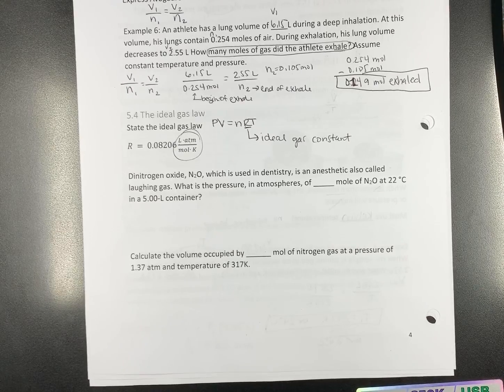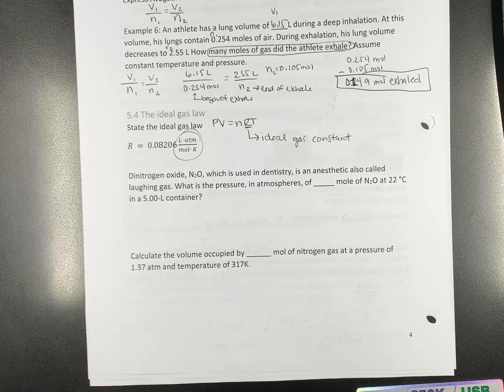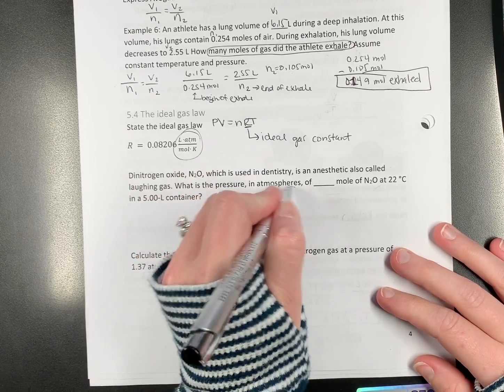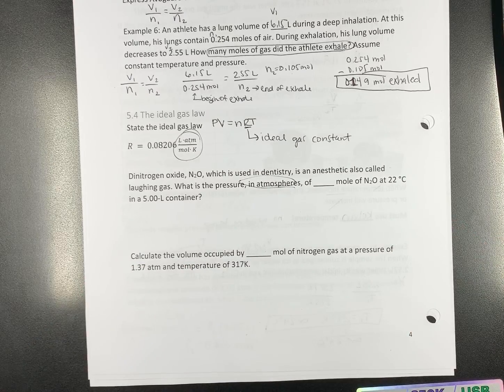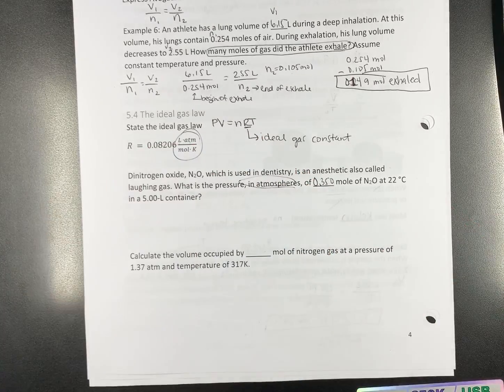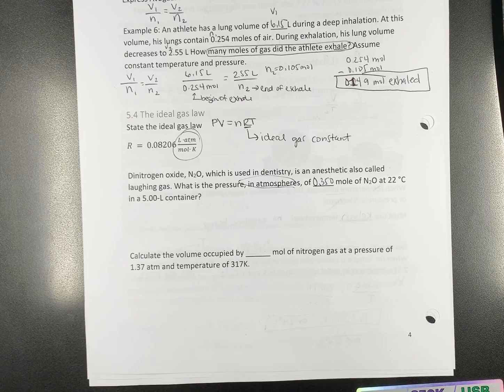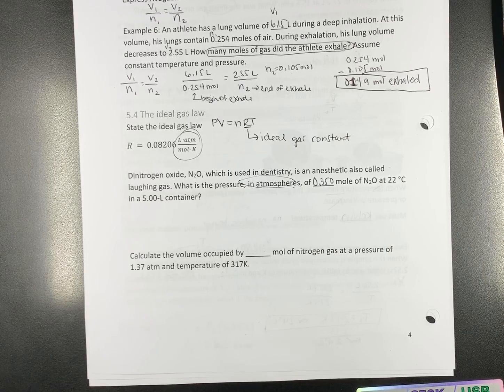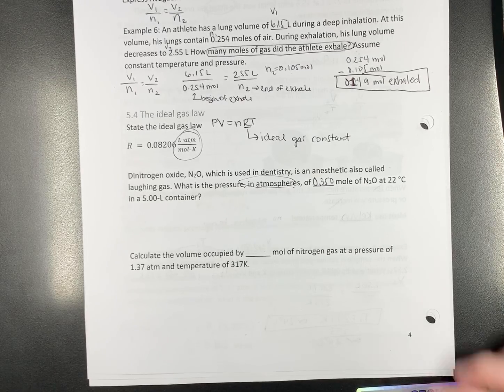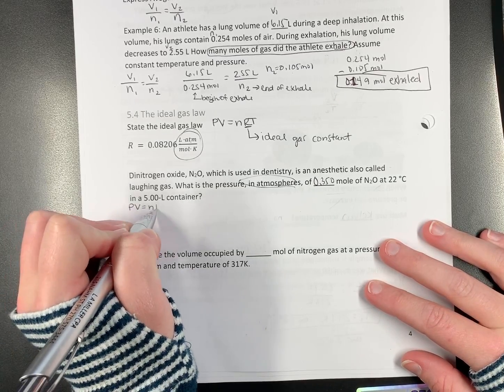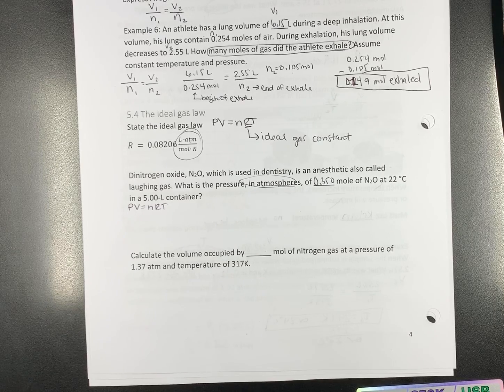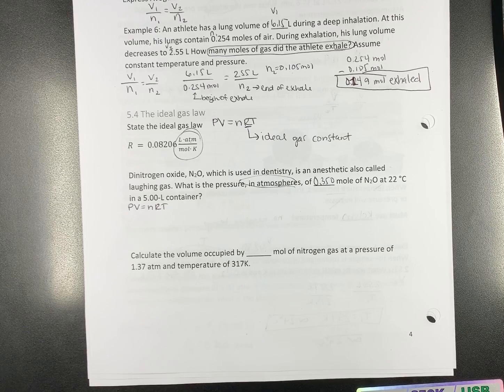Now, dinitrogen oxide or monoxide is laughing gas. What is the pressure in atmospheres of 0.350 moles, and it is at 22 degrees Celsius in a 5 liter container? There are two ways to work this problem. Let's start out with PV equals NRT.